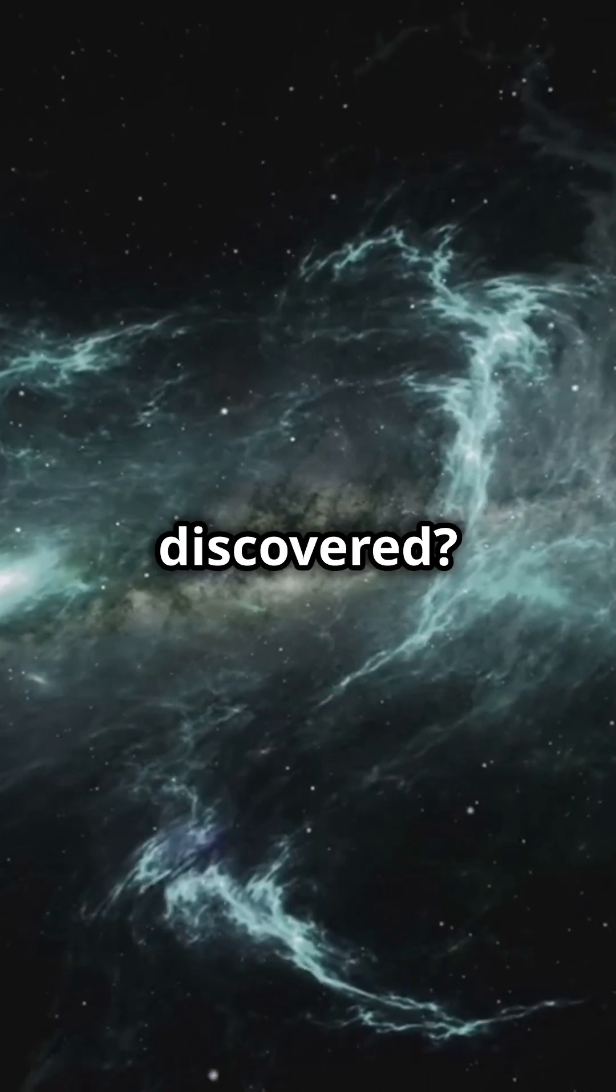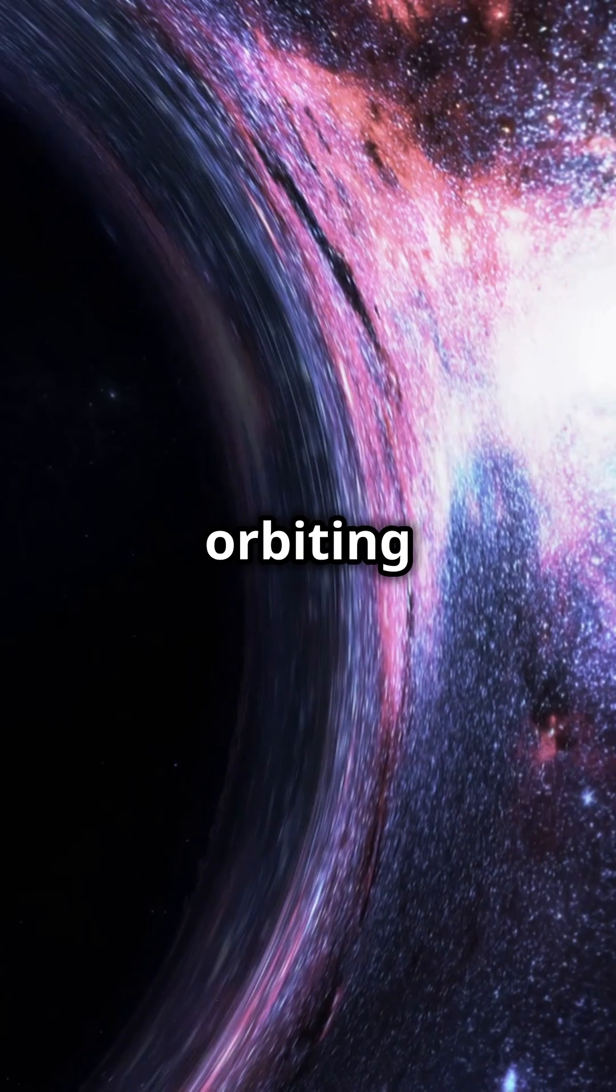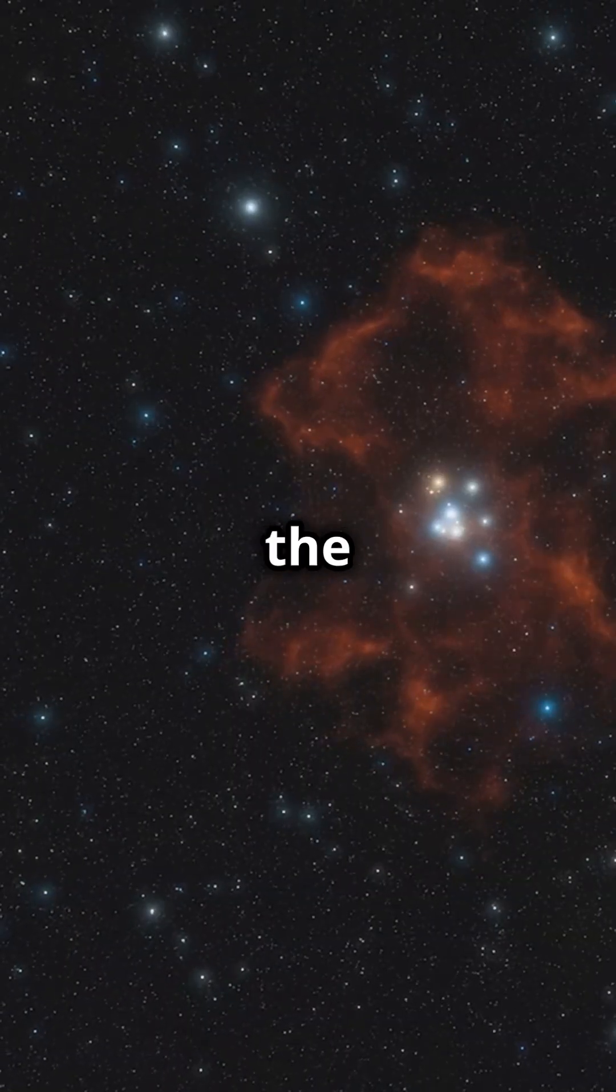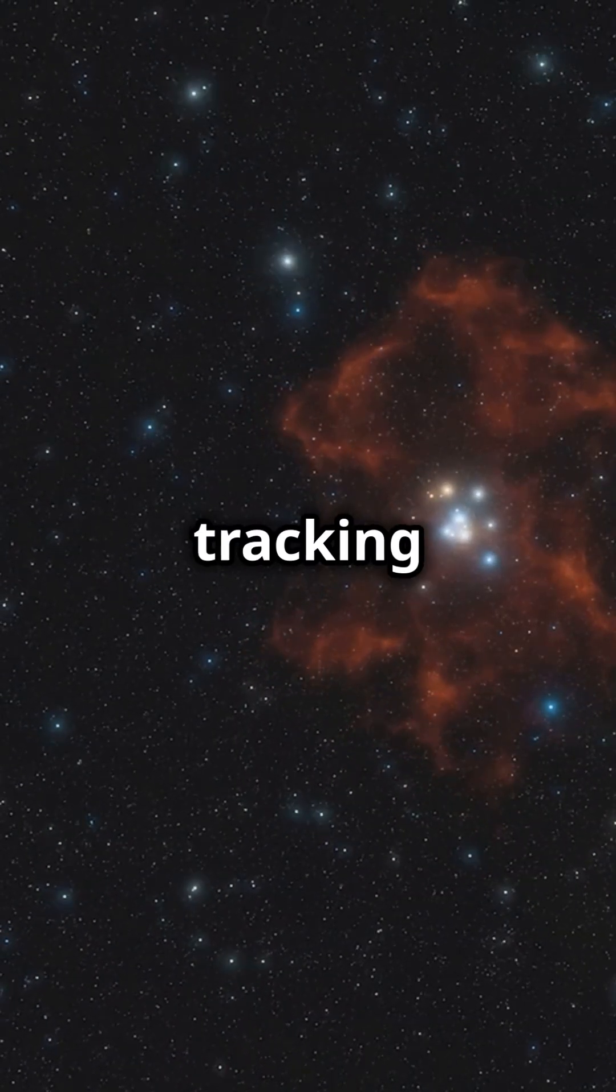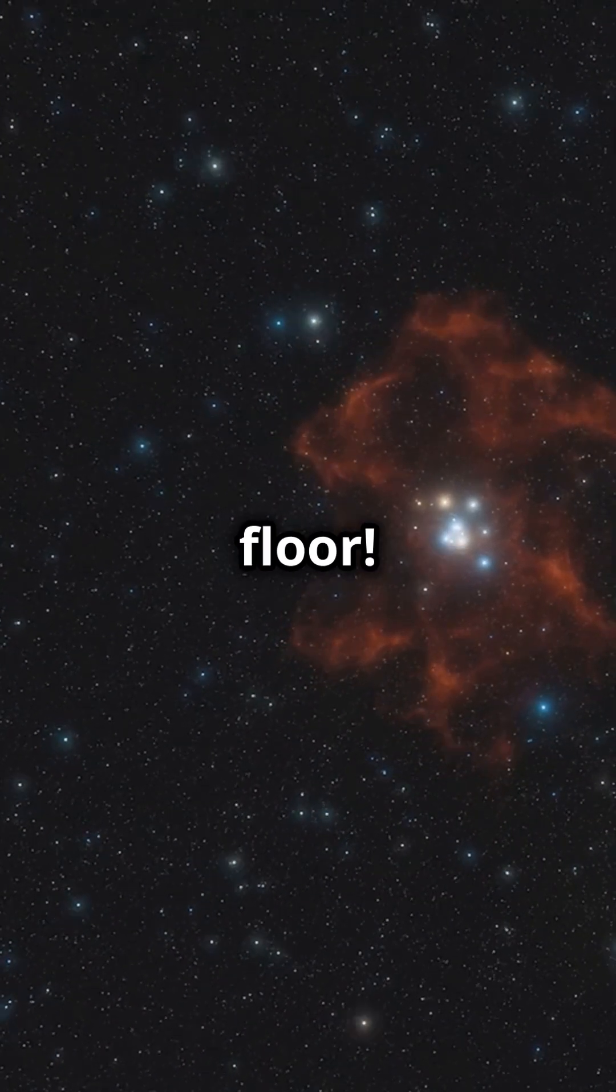How were black holes discovered? Stars orbiting around invisible points give the first clue, like tracking an invisible dancer by footprints on the floor.